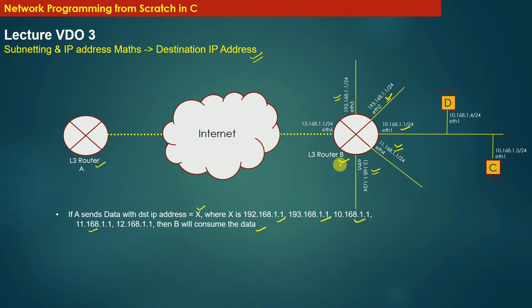When router B receives the data, it will consume it. Consuming the data means the layer 3 of the TCP/IP stack will conclude that the data is destined for router B, and it will hand over the rest of the packet to the transport layer or application layer running above the network layer in the TCP/IP stack. So router A can send data to router B by specifying the destination IP address as the IP address of any local interface of router B.